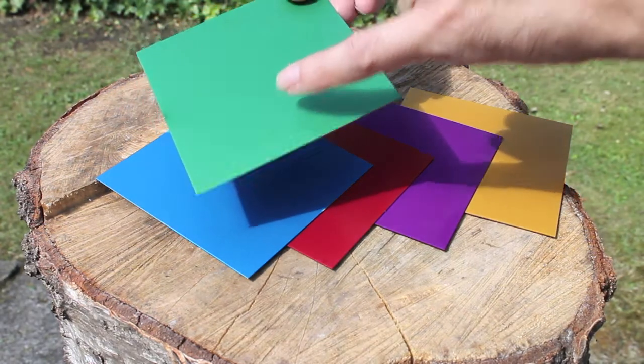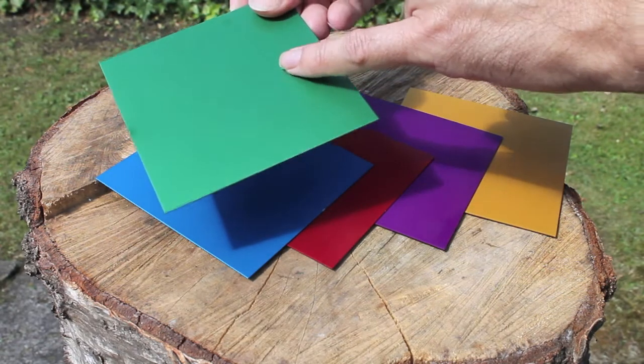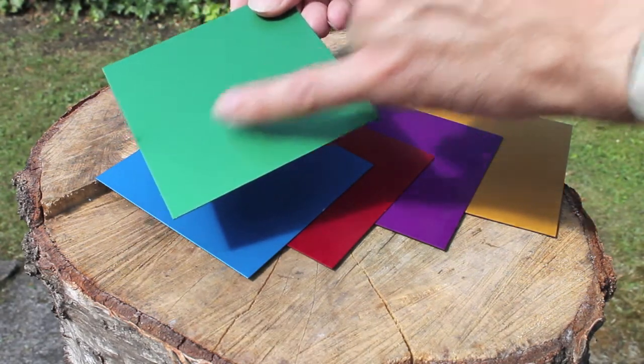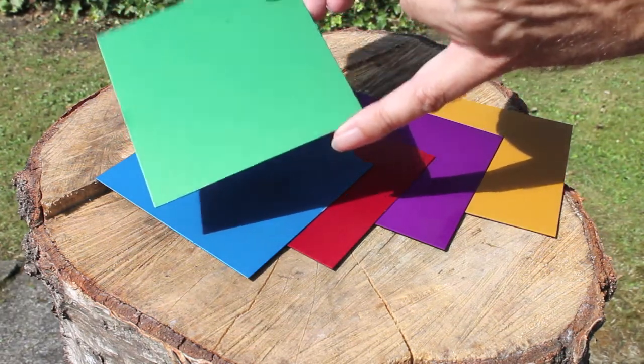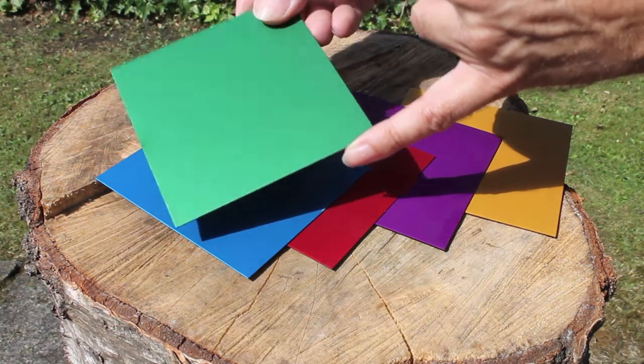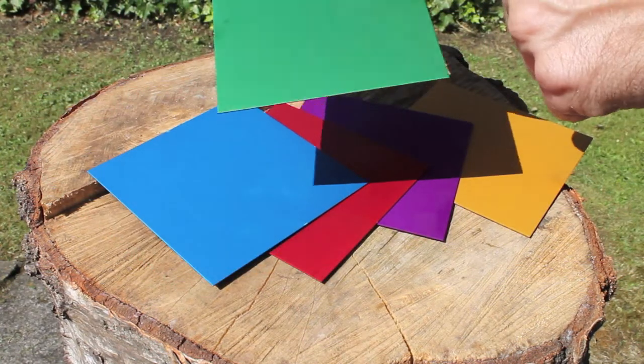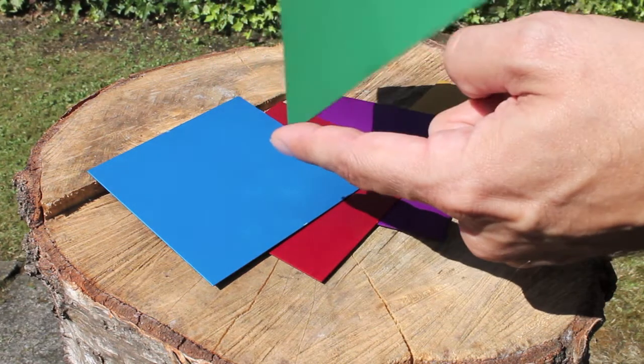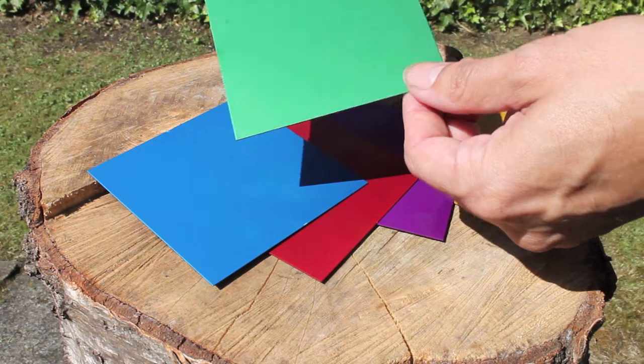Now, you'll notice that the anodized finish gives it this beautiful color, but you can still see the surface of the aluminium underneath. It has a beautiful, slightly satin look to it. It doesn't have a plastic covering on it like the silver does, so do be careful. Keep it wrapped up and only uncover it when you're working on it.